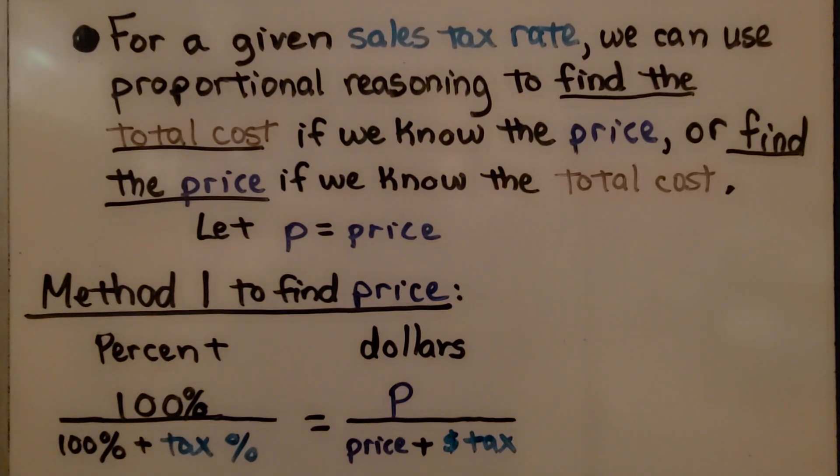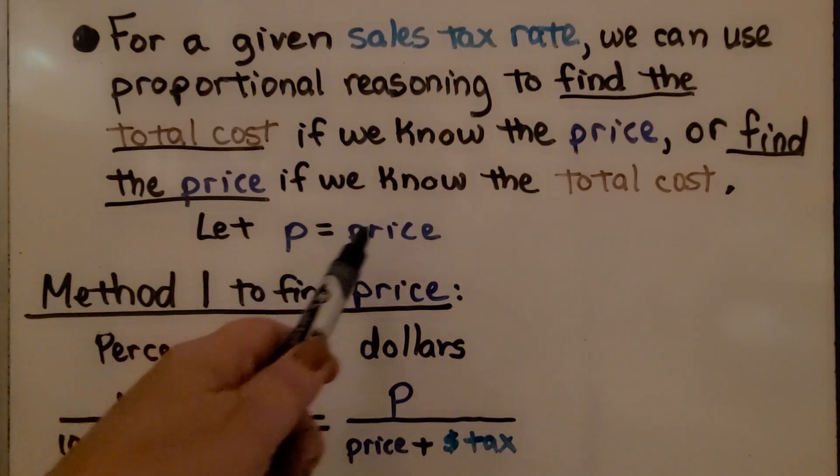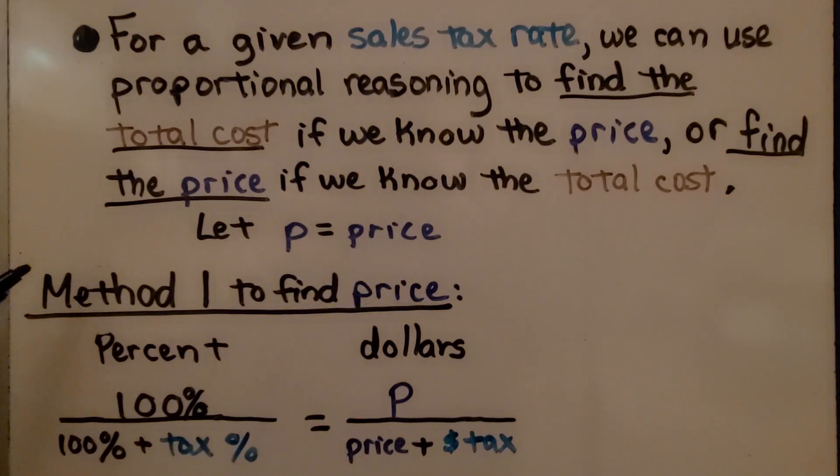For a given sales tax rate, we can use proportional reasoning to find the total cost if we know the price or find the price if we know the total cost. We're going to let P equal price. So method one, to find price, we're going to use proportions.